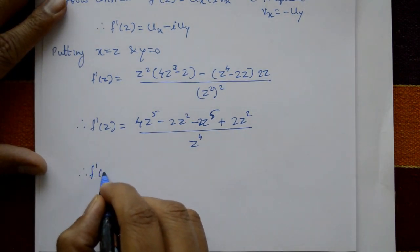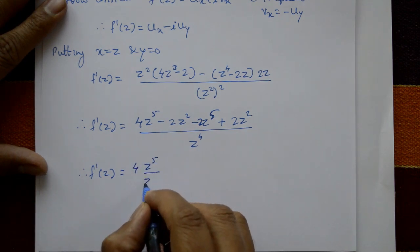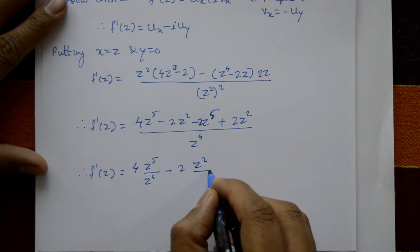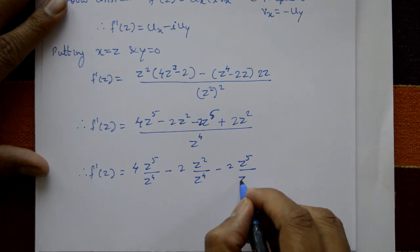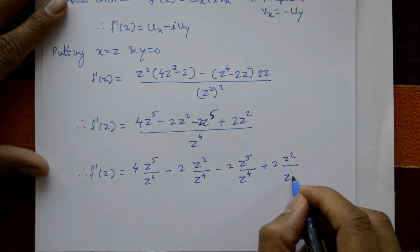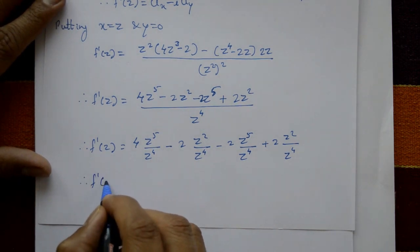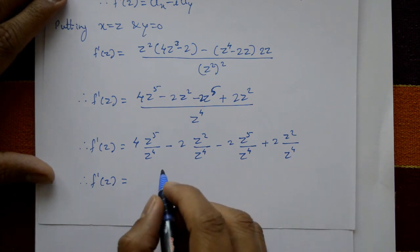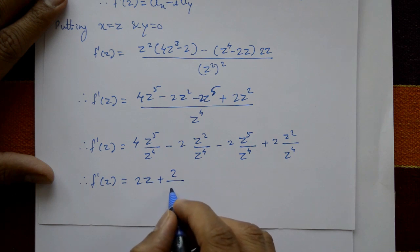Now expand and simplify: opening the bracket gives 4z⁵ - 2z² minus 2z⁵ + 2z², divided by z⁴. The terms 4z⁵ and -2z⁵ combine to give 2z⁵, and -2z² and +2z² cancel. Therefore f'(z) = 2z⁵/z⁴ + 2/z², which simplifies to f'(z) = 2z + 2/z².